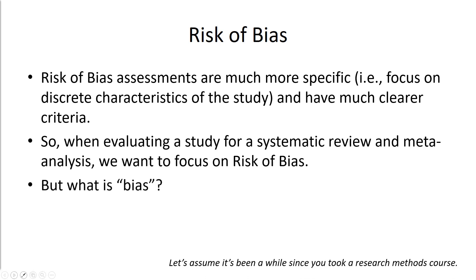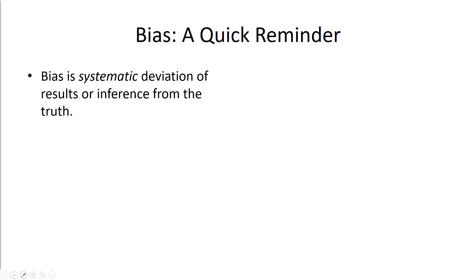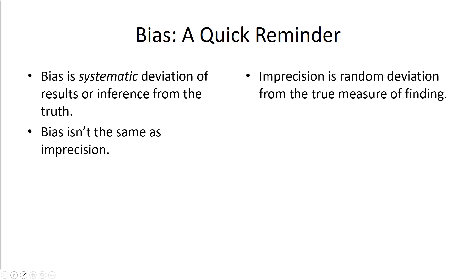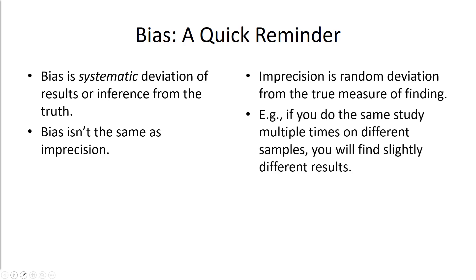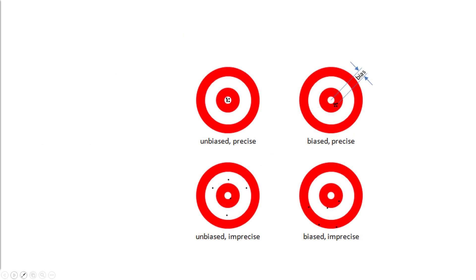What is bias? Let's assume it's been a while since you took a methods course. Bias is systematic deviation of results, or inference, from the truth. It's not the same as imprecision. Imprecision is random deviation from the true measure of the finding. For example, if I were to do the same study multiple times on different samples, I would find slightly different results in each sample — some measures higher, some lower — due to random variation in when and on whom the study is carried out.